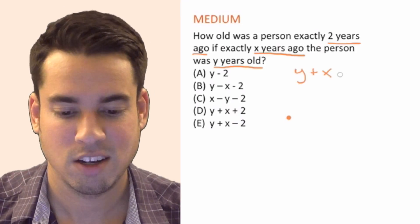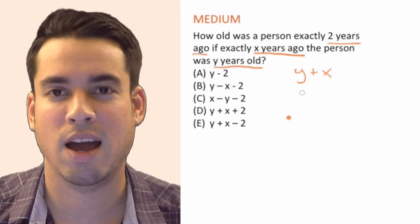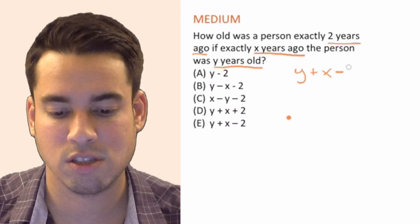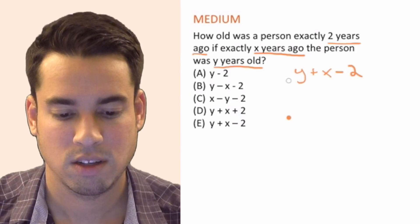Alright, so it's the same thing. So all we're doing is we're adding Y plus X, and then from this to get the age two years ago we just subtract 2. This is the formula that tells the age two years ago.